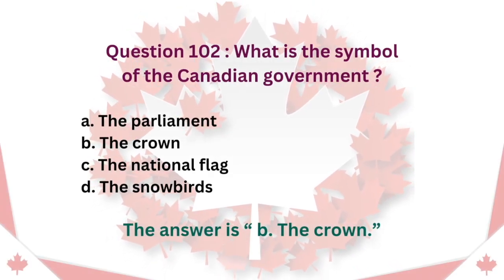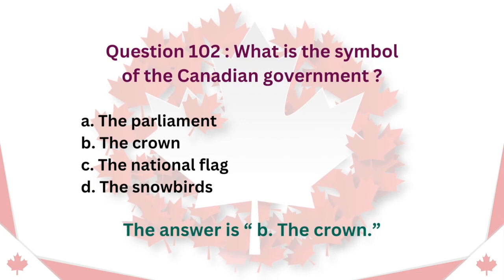Question 102: What is the symbol of the Canadian government? A. The Parliament. B. The Crown. C. The National Flag. D. The Snowbirds. The answer is B. The Crown.